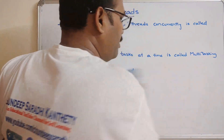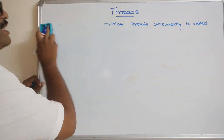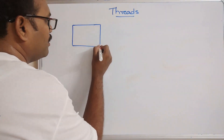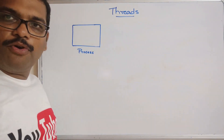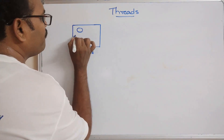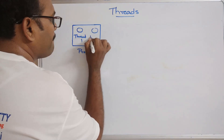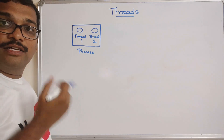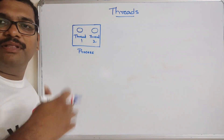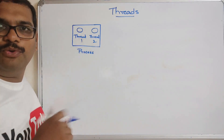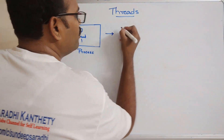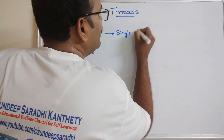Now we'll see what exactly the process looks like and how exactly the thread looks. A combination of threads is known as a process. A process can be divided into multiple threads to run concurrently and to improve performance and CPU utilization. If the process is having only one thread, this is known as a single-threaded process.